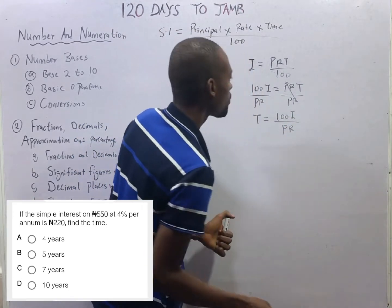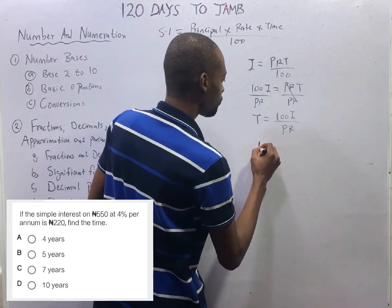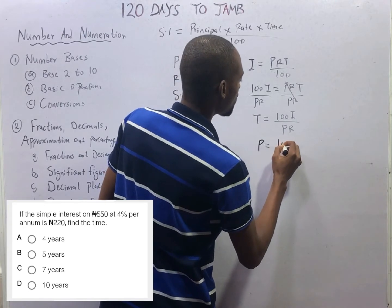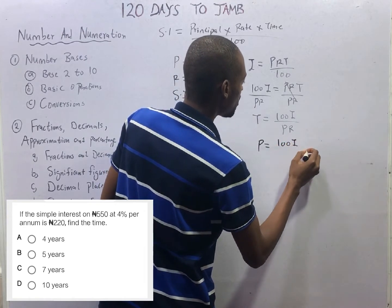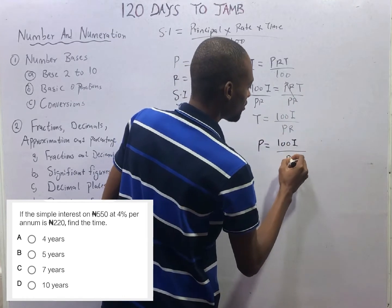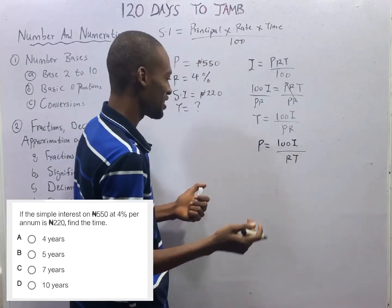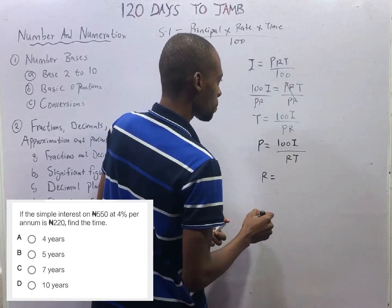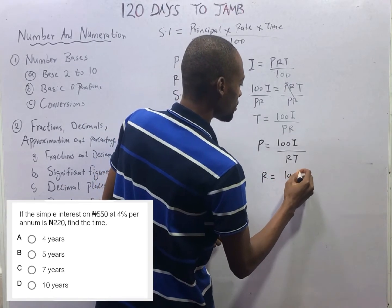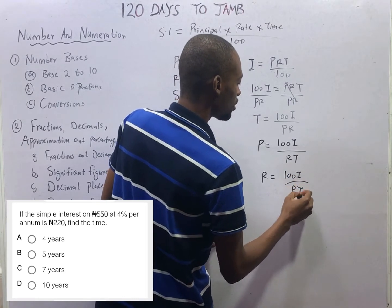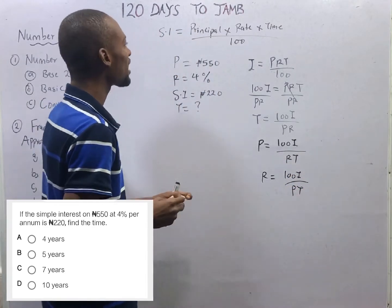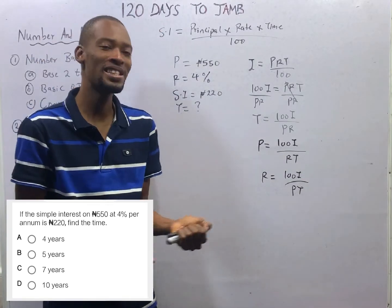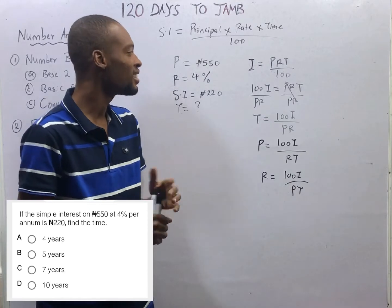If you are looking for principal, P equals 100I over RT. If you are looking for rate, rate equals 100 times interest over PT. If you look at a question where no number carries a percent or percentage sign, that means no rate is given, so you find the rate. Questions under simple interest are pretty straightforward.